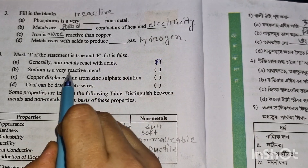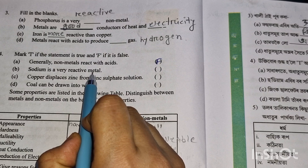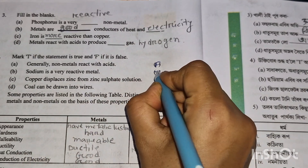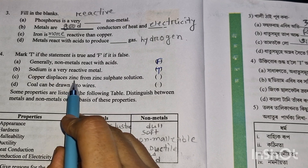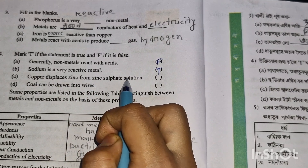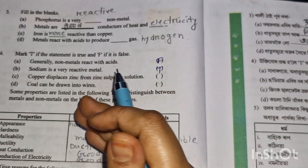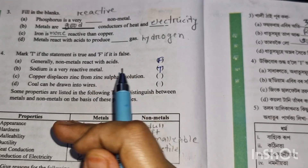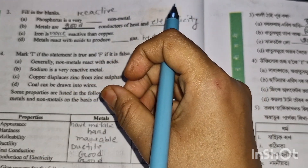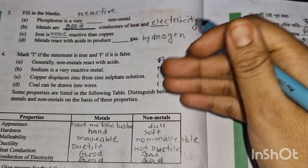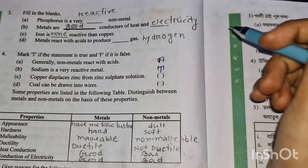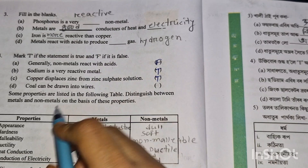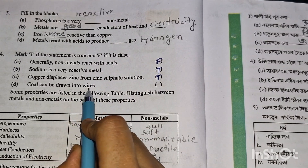Sodium is a very reactive metal. Copper cannot displace zinc from zinc sulfate solution, because copper is less reactive than zinc. Coal can be drawn into wires, illustrating ductility.